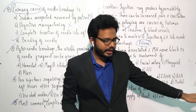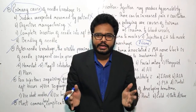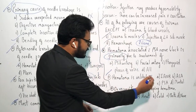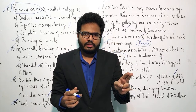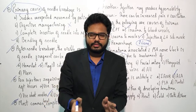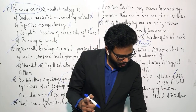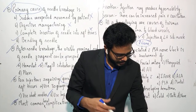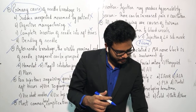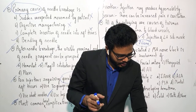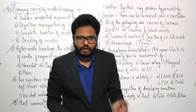Next question: hematoma is unlikely with which of the following nerve blocks — IANB, ASA, PSA, or mental nerve block? The answer is ASA, because as mentioned in the textbook, pressure is applied at the injection site during administration and for two to three minutes after, making hematoma unlikely. Similarly, for mental and incisive nerve blocks, pressure effectively minimizes hematoma risk.